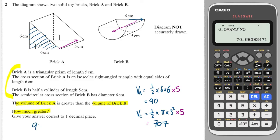So the difference is just going to be 90 minus 70.7. So I can do 90 minus my previous answer, and I get 19.3.